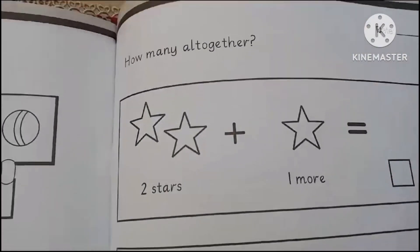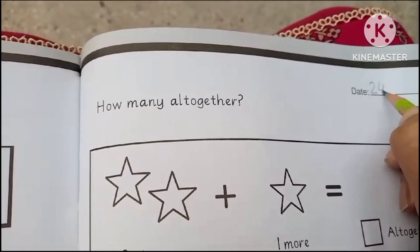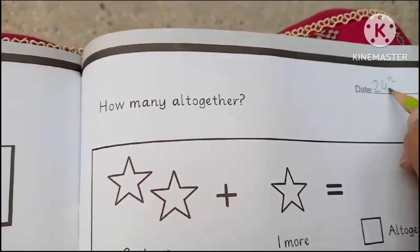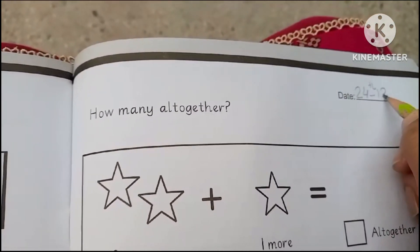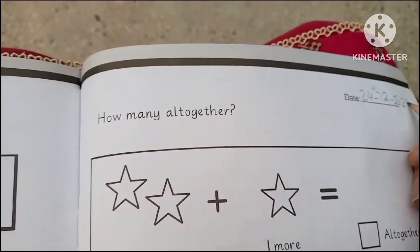First we will write the date. Today is 24, 24, 12, 20, 23.